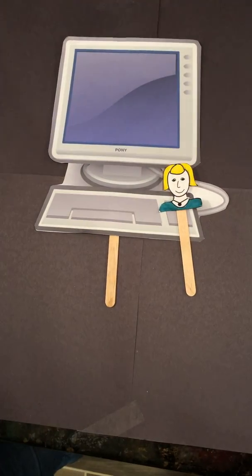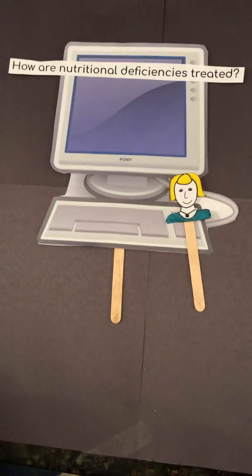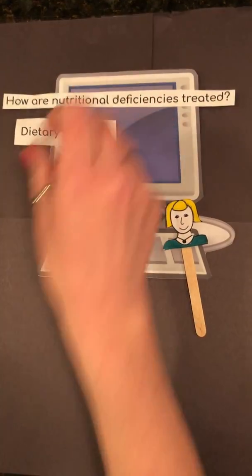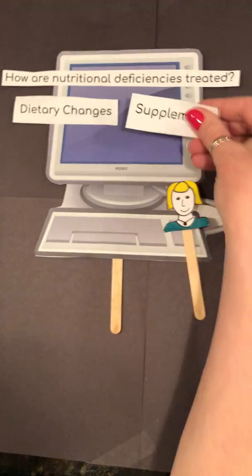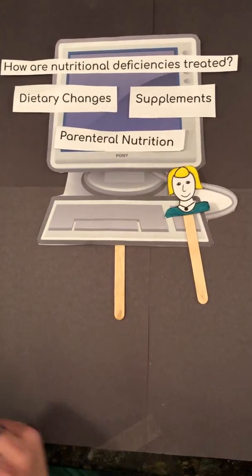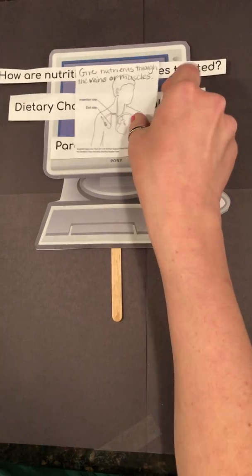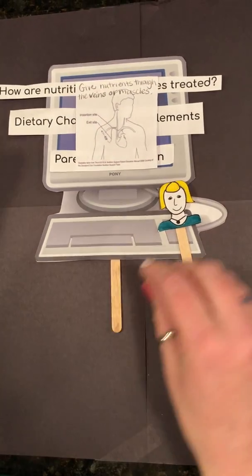Then she asks: How are nutritional deficiencies treated? Some doctors suggest dietary changes. They may even add supplements, and then lastly would be parenteral nutrition. Now Jenny didn't know what parenteral nutrition was, so she looked it up. She found out that's when they give you nutrients through your veins or your muscles.